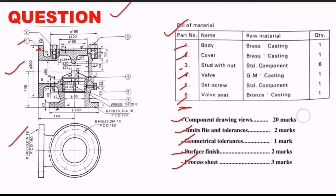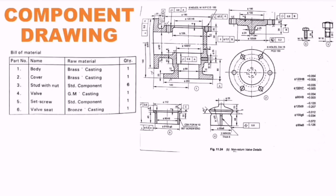We move on to the first task: drawing the component drawing views, which means dividing the assembled figure into individual parts. This is also called part drawing or component drawing — simply breaking the assembly into its individual parts.